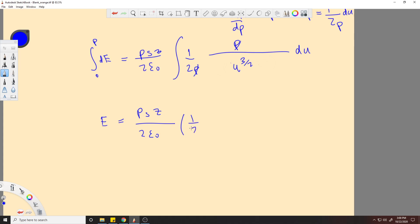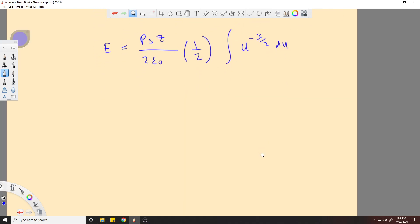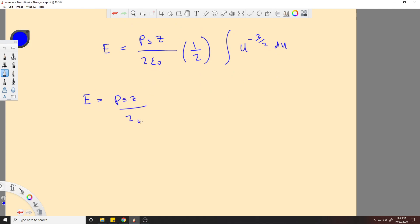So this would be a one-half outside here. The integral, so now we do the integral. The integral will be, this will turn into a negative one-half, right? So that ends up bringing over a negative two, and this will be u to the negative one-half.